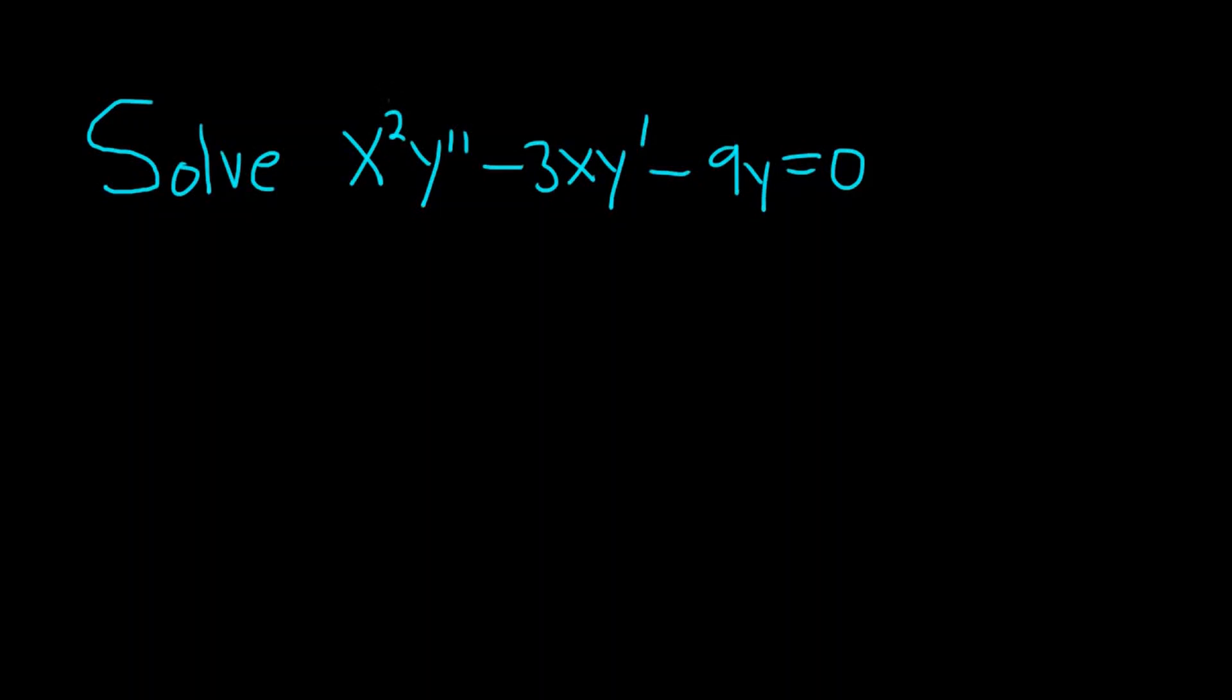We know that because here the power of x is 2 and it matches the order of the derivative. Here the power of x is 1 and it matches the order of the derivative. And then here you can think of the power of x as being 0, and y is actually the 0th derivative of itself.